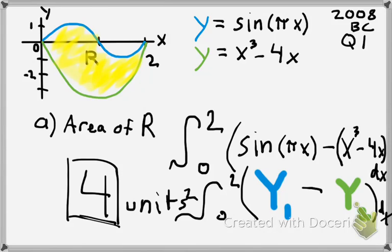Part b asks, it says that the horizontal line, which is y equals negative 2, so let's draw that right here, y equals negative 2, splits the region R into two parts. It says write an integral, but do not evaluate the expression for the area between the two curves. It's asking for the area between the red curve and the green curve. In this case, y equals negative 2, and y equals x cubed minus 4x.